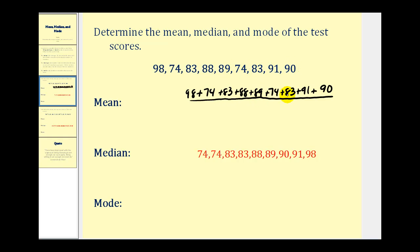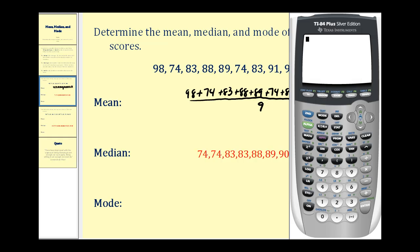There are nine numbers, so we'll divide this sum by nine. Let's use our calculator. The last number was 90, and we're going to take this sum and divide by nine because there are nine numbers. So the average, or the mean, is approximately 85.6.